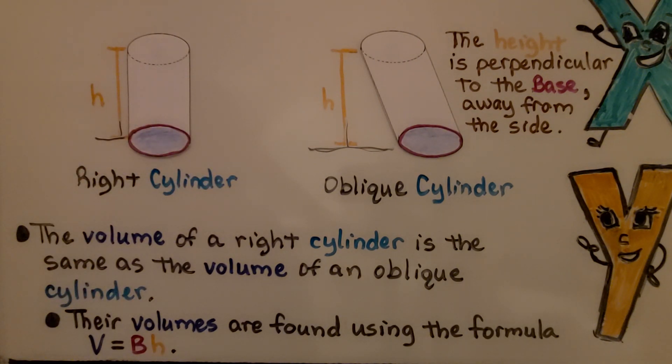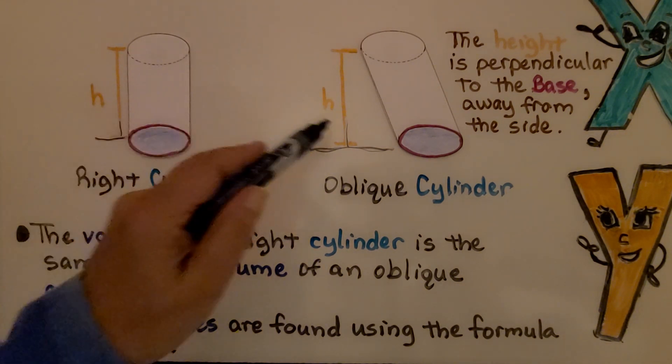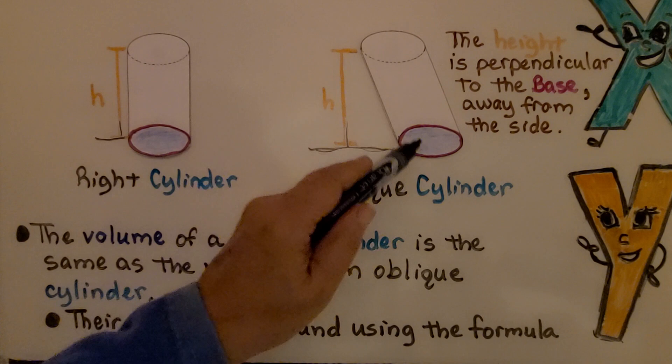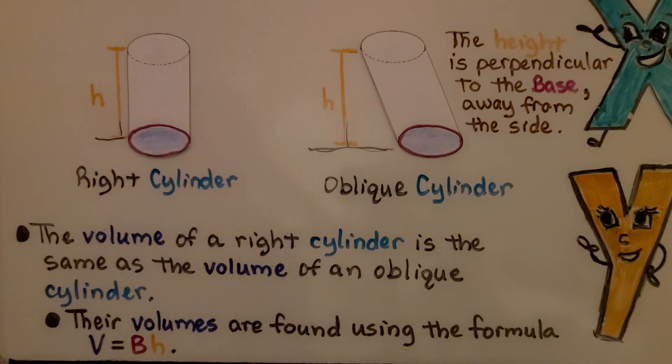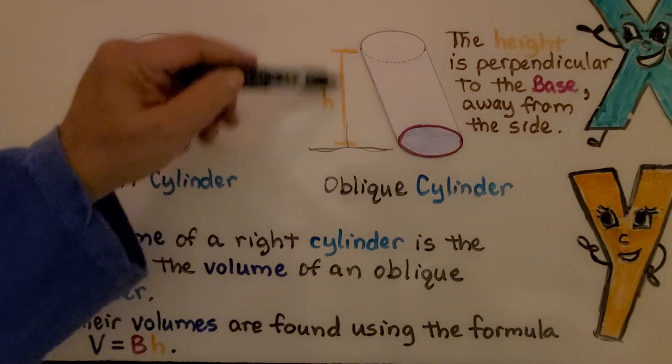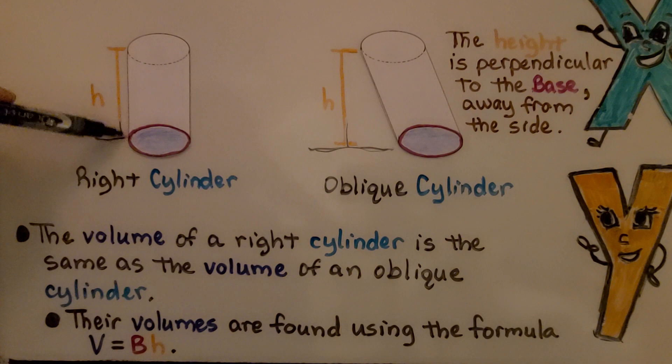The volume of a right cylinder is the same as the volume of an oblique cylinder. If we filled them with so many ounces of rice, we would use the same number of ounces of rice to fill either one. The volume is the same. Their volumes are found using the formula volume equals base times height. The only difference is that this one's height is out here, where this one's height is right next to the side.